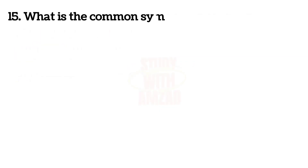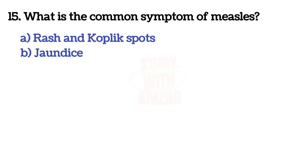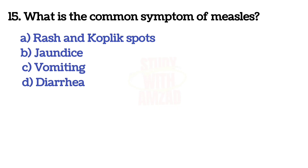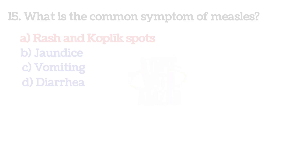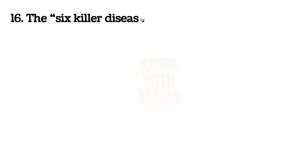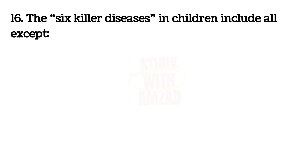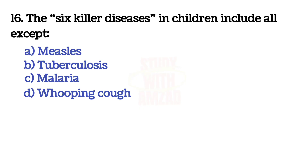Next question: What is the common symptom of measles? The answer is A — rash and Koplik spots.